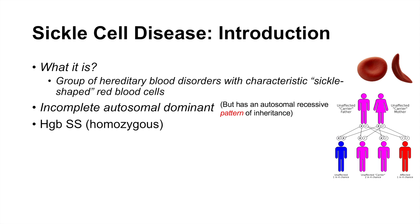An individual with two copies of hemoglobin S — S standing for the sickle cell disease allele — so hemoglobin SS, or homozygous, these are the individuals that are fully affected by sickle cell disease. These homozygous individuals make up about 1 in 400 to 1 in 600 African-Americans who are homozygous for sickle cell disease.